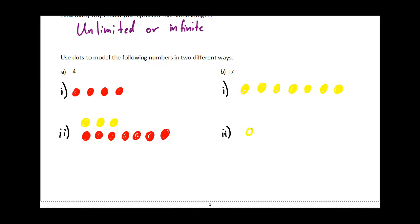But I could do it other ways. For example, maybe if I had nine positives. One, two, three, four, five, six, seven, eight, nine positives. Well, if I have nine positives, then I would need to have two negatives. One, two negatives. And those two zero pairs cancel out. I'm left with positive seven.